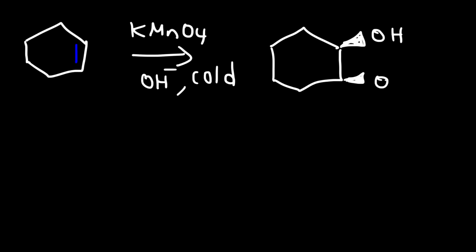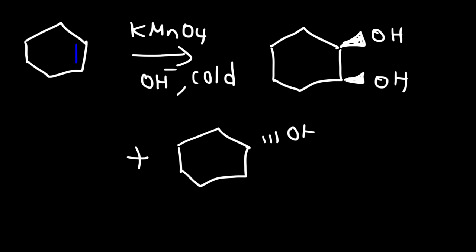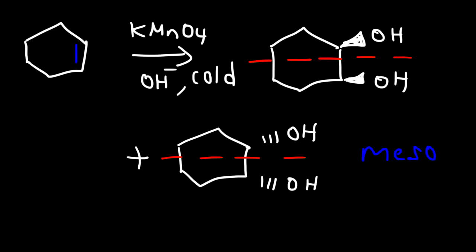You're going to have two hydroxyl groups on the same side. You can draw your product one way or another way. Notice that these two products are identical. Due to an internal plane of symmetry, these two products are meso products. Therefore, because they're identical, we only get one product in this reaction.